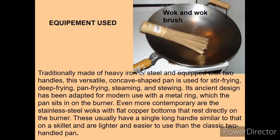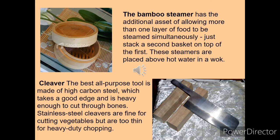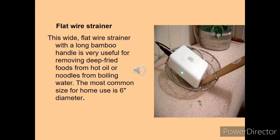Now we'll talk about the different types of equipment used in Chinese cuisine. Chinese people use the wok for making all their dishes — soup, non-veg, noodles, chow mein. Along with the wok, there is a brush used for cleaning after each preparation. The bamboo steamer is used for steaming different types of food. The cleaver, called the Chinese knife, can cut through bones — these are stainless steel cleavers generally used by Chinese people.